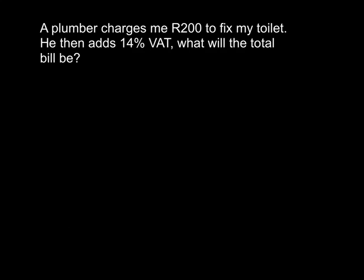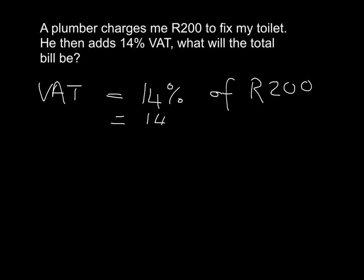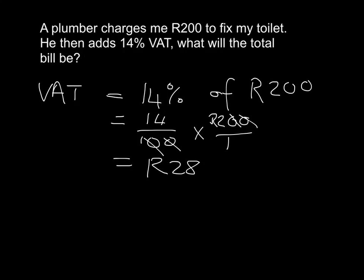Why don't you try an example? Open your homework book and try this: a plumber charges me 200 rand to fix my toilet. He then adds the 14% VAT. What will the total bill be? Pause the video and try this now. The VAT will be 14% of the 200, that's 14 over 100 times 200. Dividing top and bottom by 100, we're left with 14 times 2, which is 28. So the VAT that he will charge me is 28 rand.